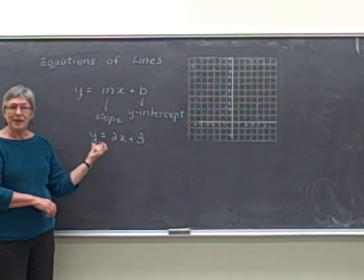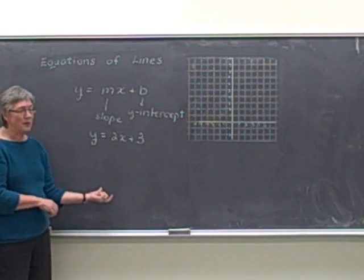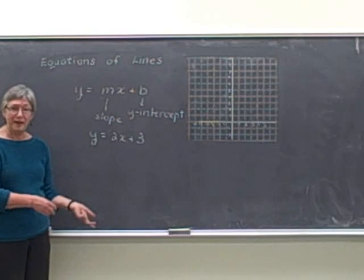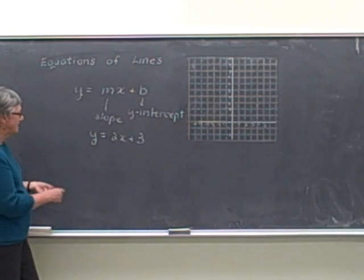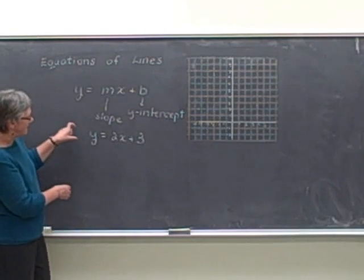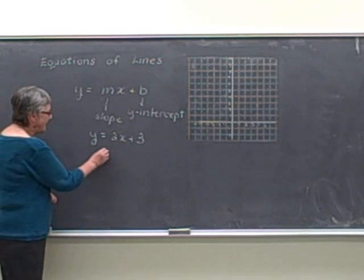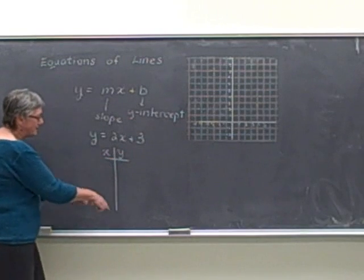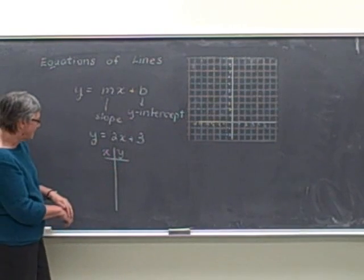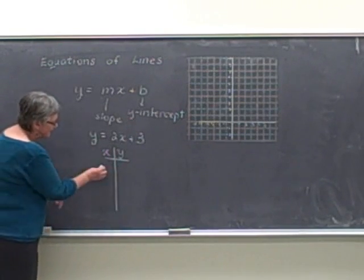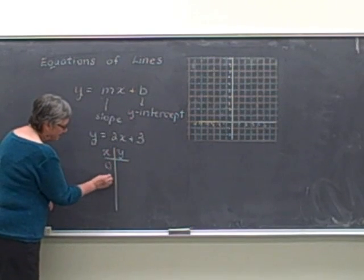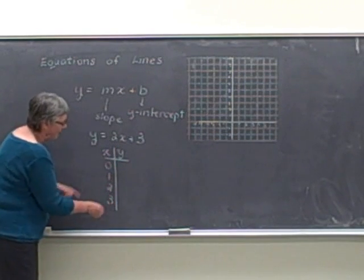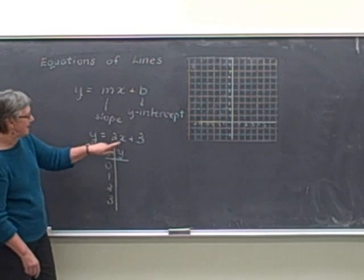We're going to look at a couple of different ways that we can graph this line. Probably one of the most straightforward ones is simply to find points. We're going to find points by finding x and y values that make this equation true. I'm going to use a table and sometimes books use a table that goes up and down, sometimes you see tables that go across. I'm going to start by just choosing numbers for x and then we're going to find the corresponding y values that would make the equation true.